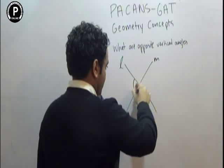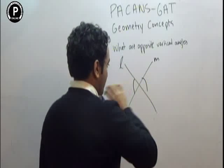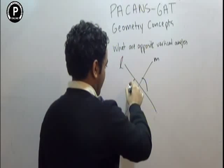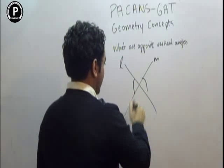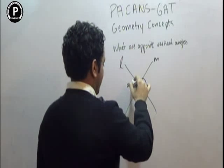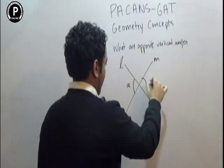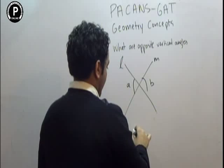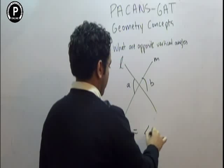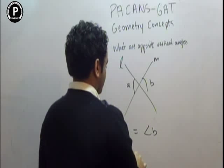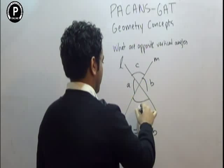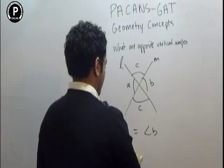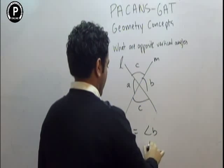Now, these are opposite vertical angles. We will call them opposite vertical angles. And if this angle is A and this angle is B, angle A is going to be equal to angle B. And angle C is going to be equal to angle D.